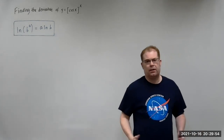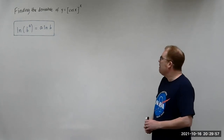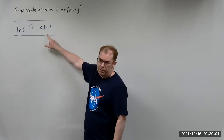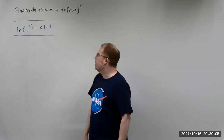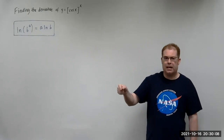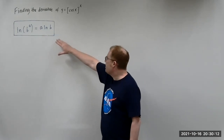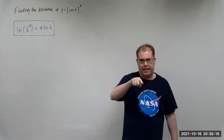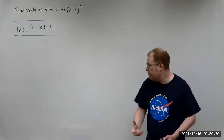So let's think about this. What we can do is utilize this property here. Remember that if you have the natural log of b to the a, then that is equivalent to bringing the a down and multiplying by natural log b. If we apply that here, it will allow us to bring down the x, and then we have something we can work with.